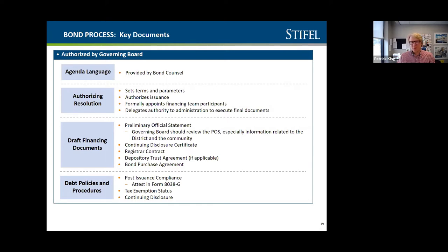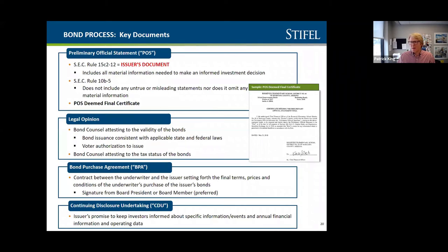Another element is debt policies and procedures — a lot of folks have policies around when to issue bonds and what the bond issue looks like, and a debt policy would set that. The preliminary official statement — for those who don't know or have repressed the memory of working on it — is basically the marketing document for the issue. It's like those little pamphlets you get in the mail after purchasing securities — everything about the issue that an investor would need to know.